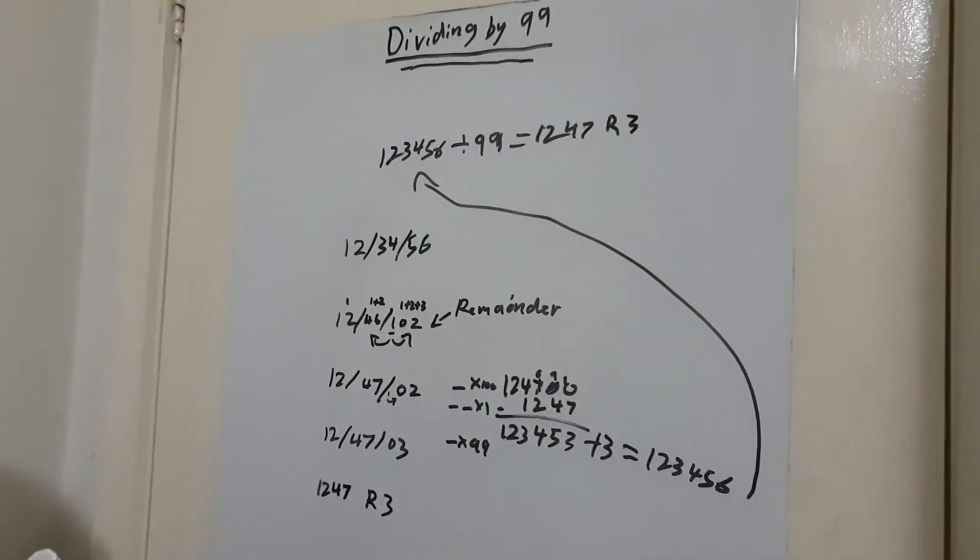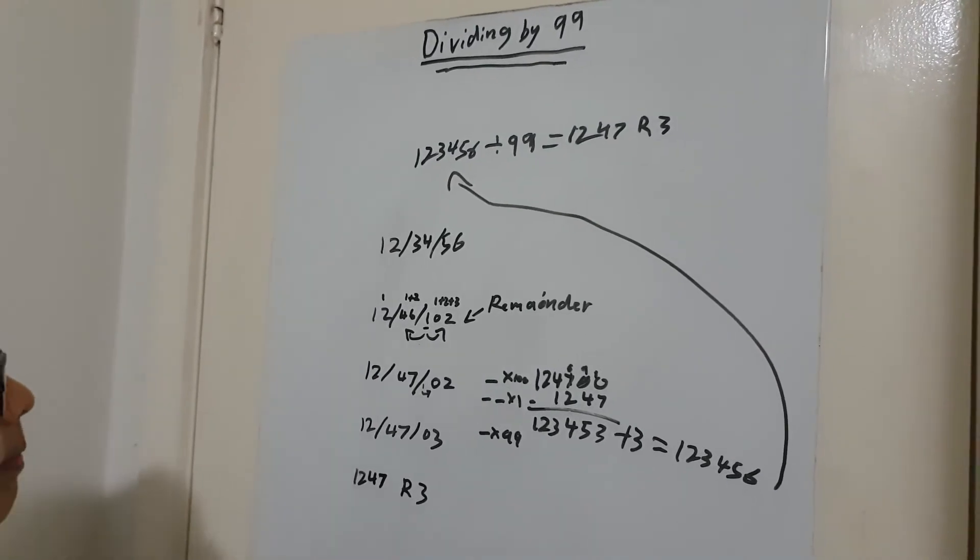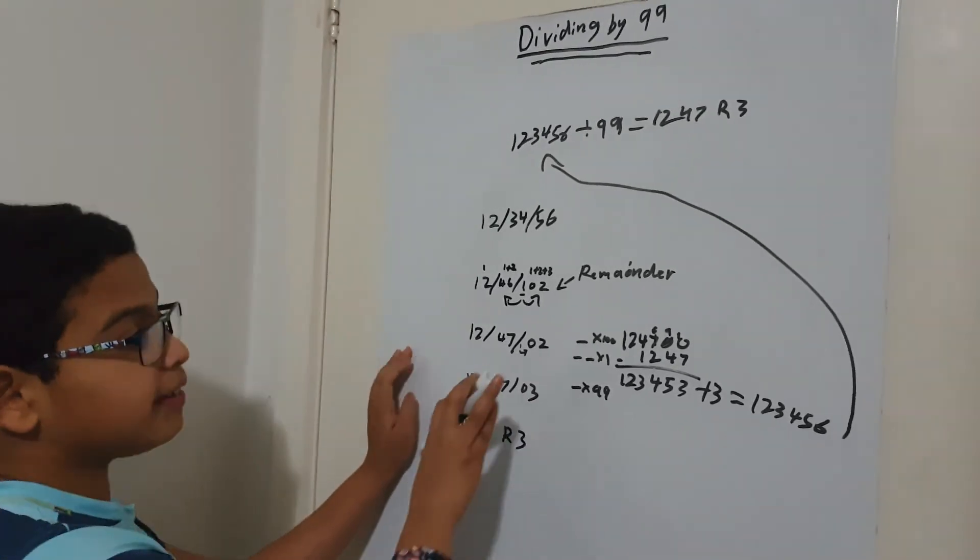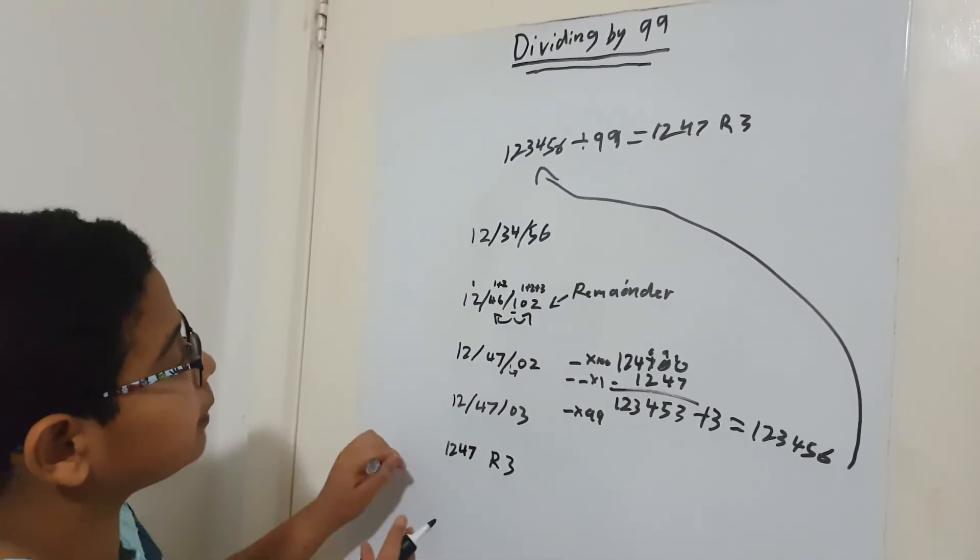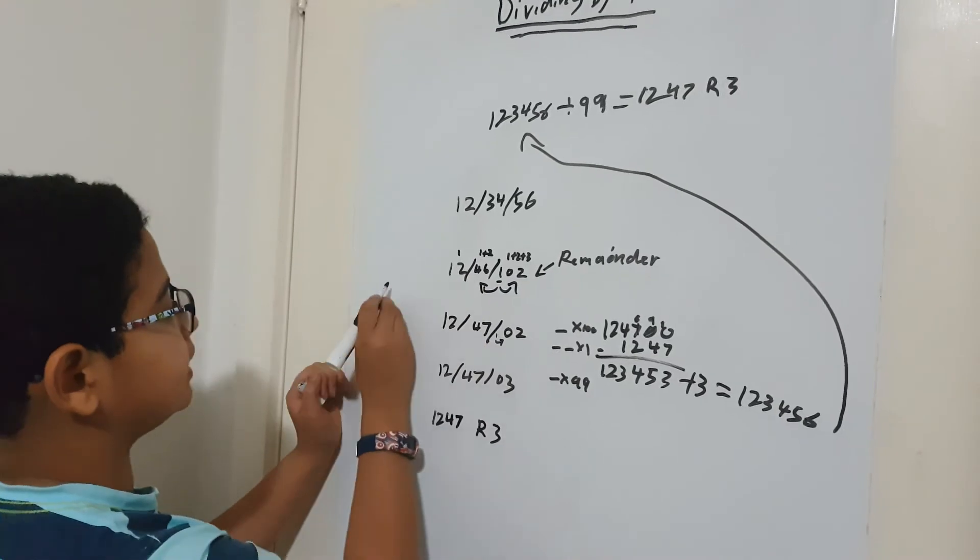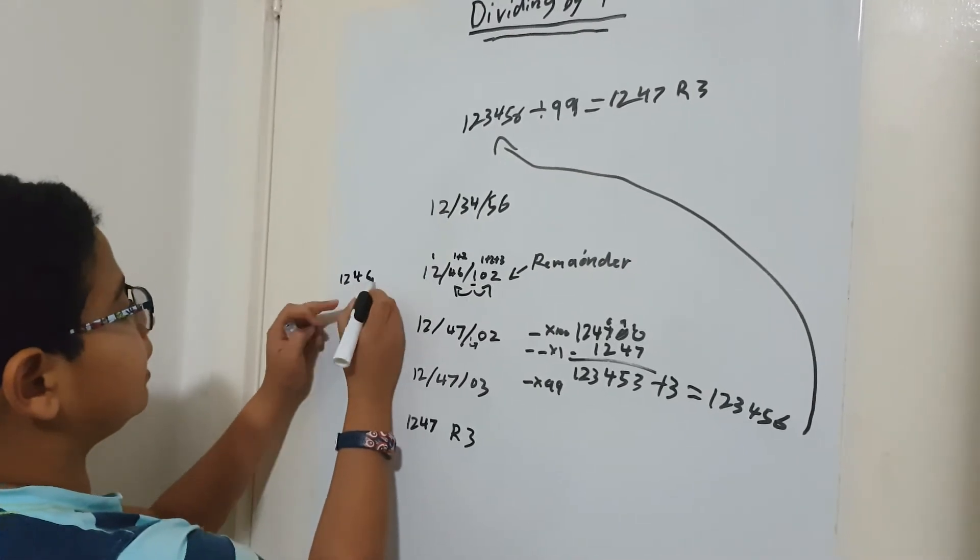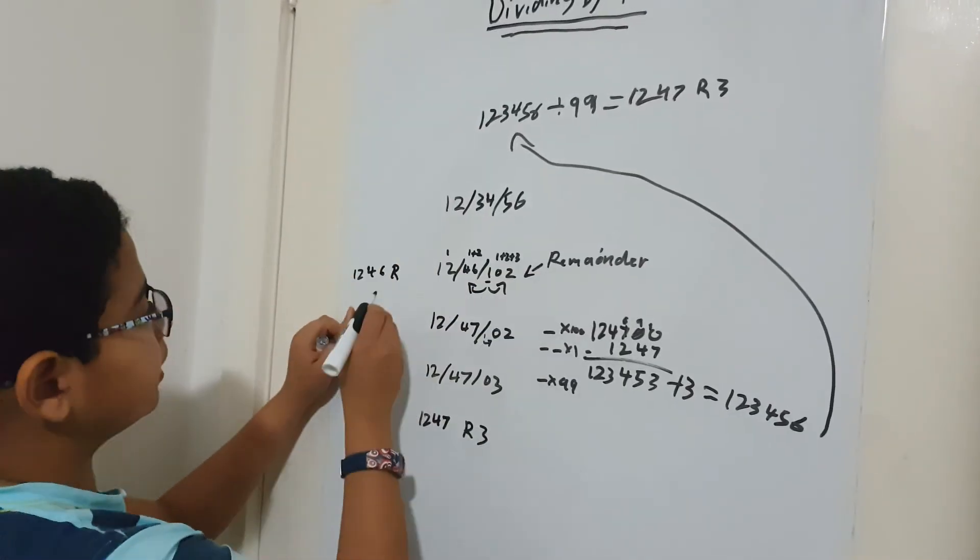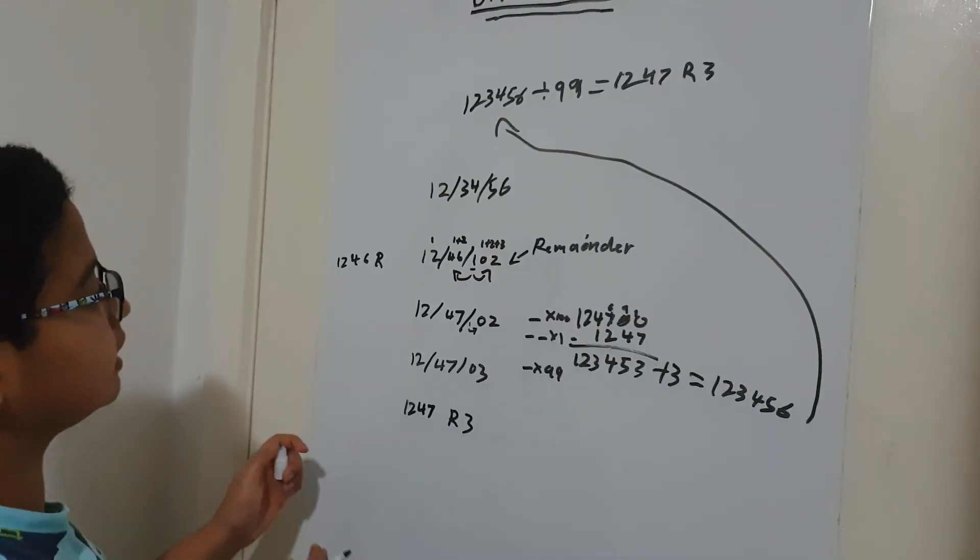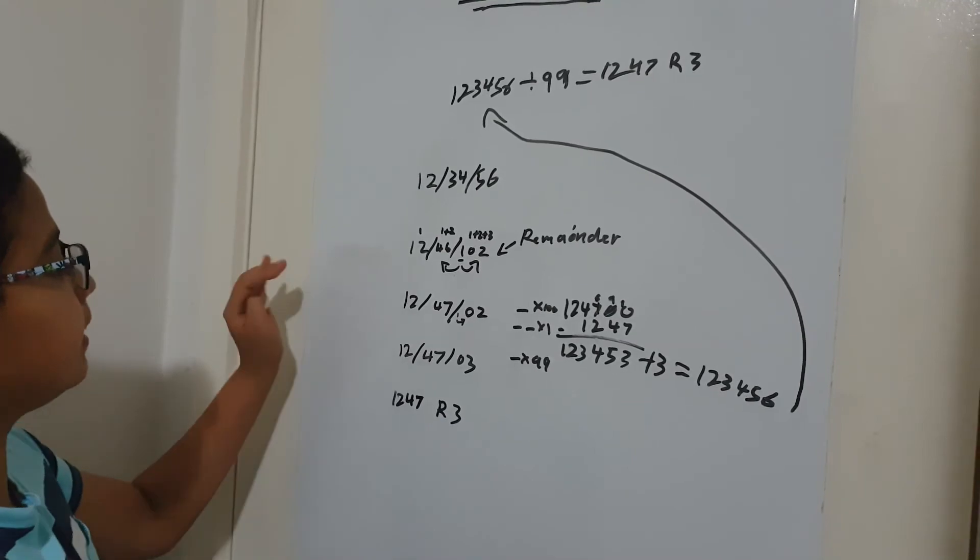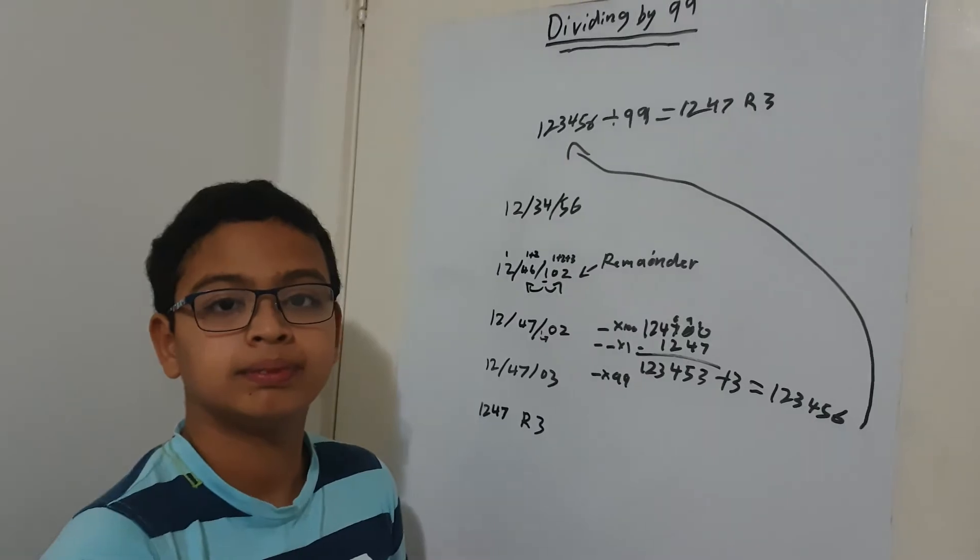Now I'm going to clear the board and give you another example. And before, if you had that remainder that was less than 100, then all you would have done is made it 1246, and then remainder whatever you got. So you don't have to do that extra step of converting the remainder. So, I'll be back with a new example.